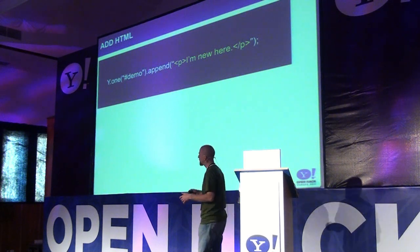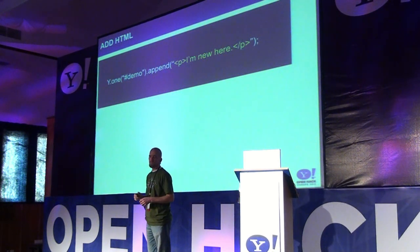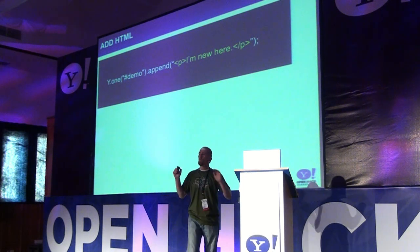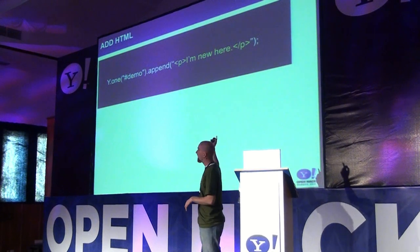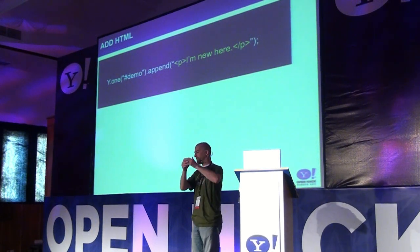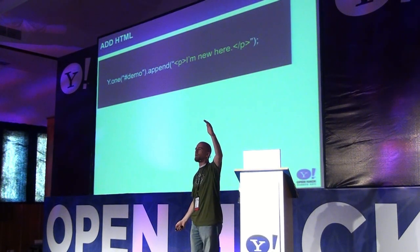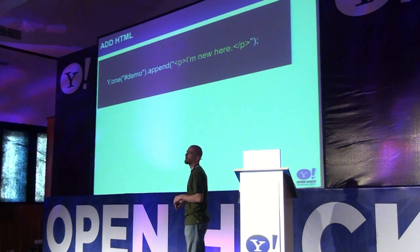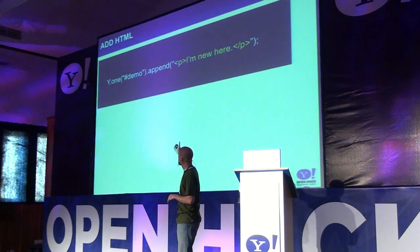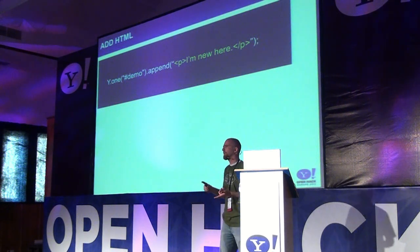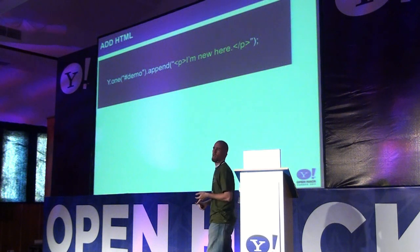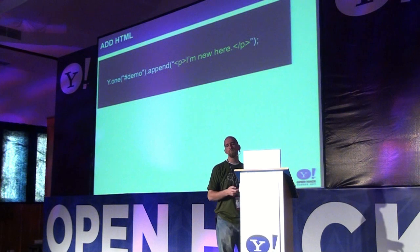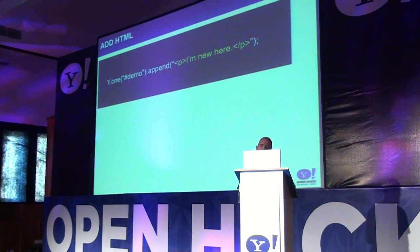Now we're pushing stuff out into the HTML. There are a lot of methods to help you do that. A really simple method is append() — pass it an HTML string. This can be an arbitrary HTML string; you can put a big, long nested DOM structure, a bunch of child tags, sibling elements, all that sort of stuff, and it'll dump it out inside of the demo container. You also have methods like insert(), prepend(), or setContent() — all sorts of conveniences for manipulating the content.